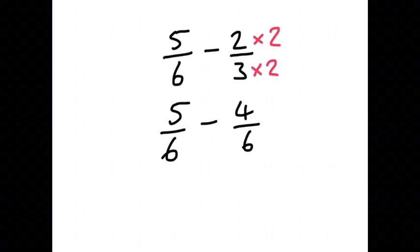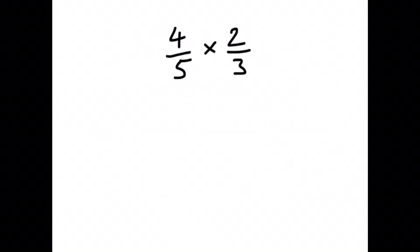We've got 5 sixths minus 4 sixths, which is 1 sixth. So subtraction is very straightforward once we know how to do addition. Multiplication is actually the easiest one here. All we're going to do is multiply the tops and multiply the bottoms. So 4 times 2 is 8, 5 times 3 is 15, and that's all we have to do: 8 fifteenths.